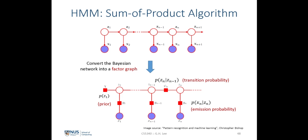First, let us convert the hidden Markov model Bayesian network into a factor graph, where we simply do a moralization of all the graph. Since this is a tree-like structure where any random variable has at most one single parent, there is no need to introduce any additional elimination clique in the moralization step. The factor graph also ends up as a tree structure, where the first factor chi represents the prior distribution of z1, and the rest, represented as g and psi, represent the emission and transition probability distributions respectively.